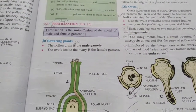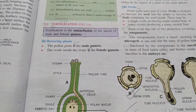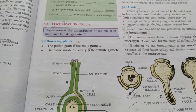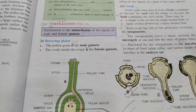After pollination, the next step is fertilization, which is the fusion of the male and female gametes leading to the formation of the zygote. First, let's understand what happens to the pollen grains.